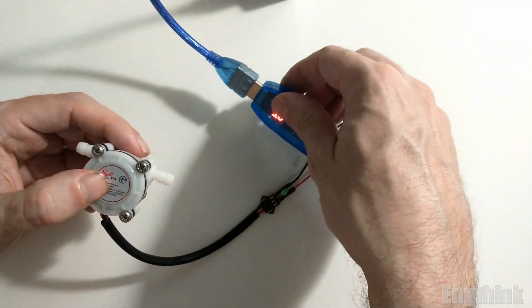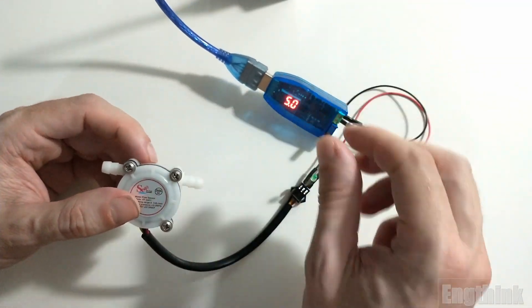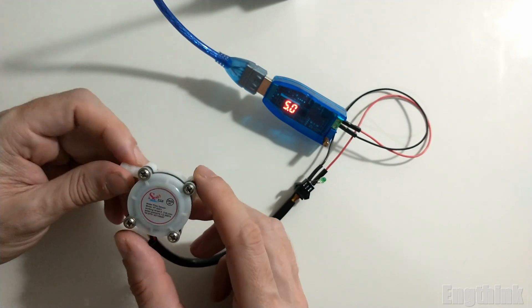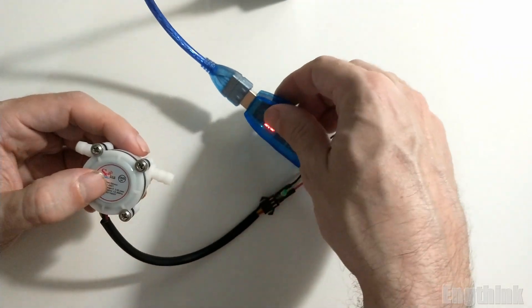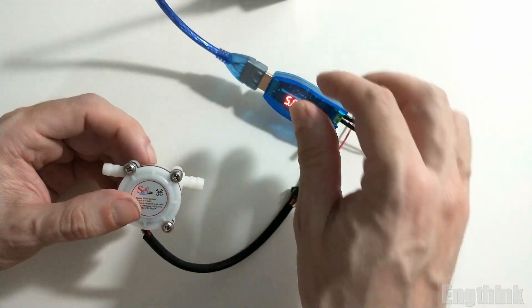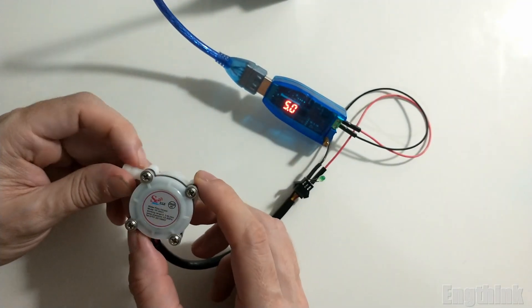The behavior with water will be almost the same because inside the flow sensor we have a turbine that will spin according to the velocity of the fluid or air passing inside.